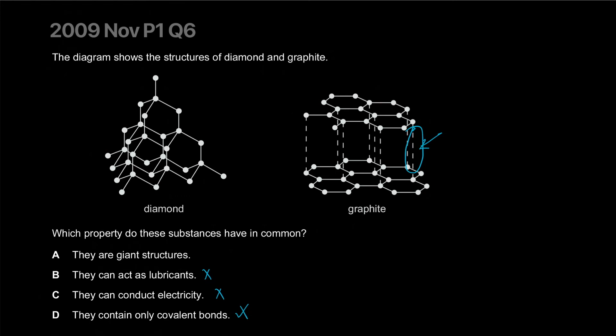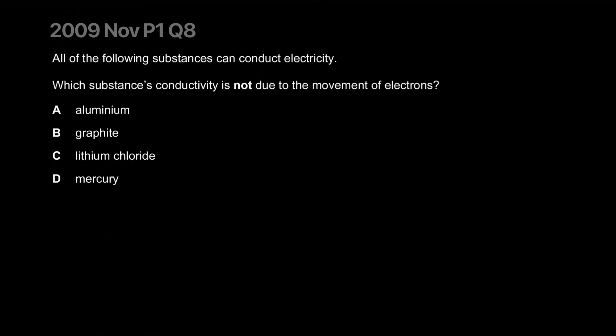All of the following substances can conduct electricity. Which substance's conductivity is not due to the movement of electrons? Lithium chloride is ionic and does not have free moving electrons. It conducts because it has ions that are able to carry charge. Correct answer is C.